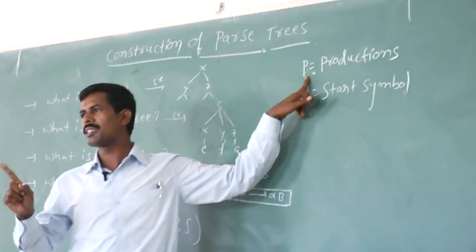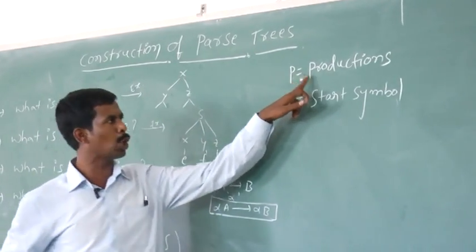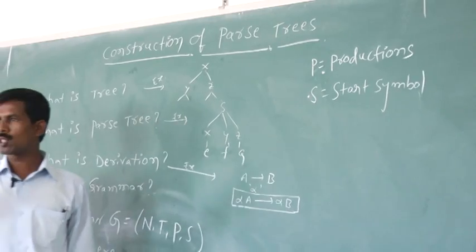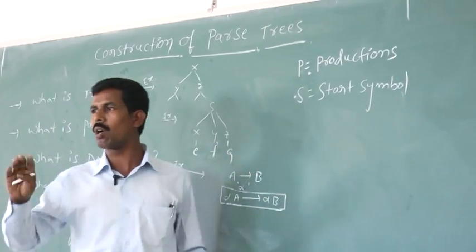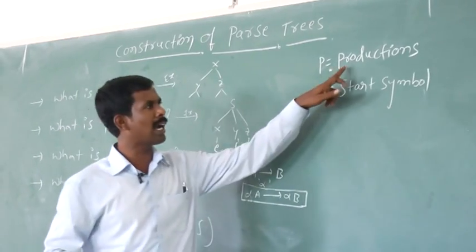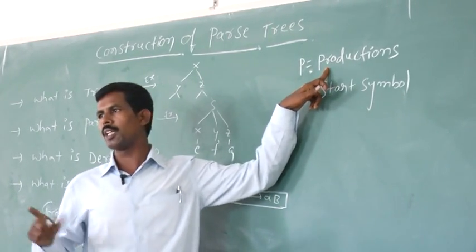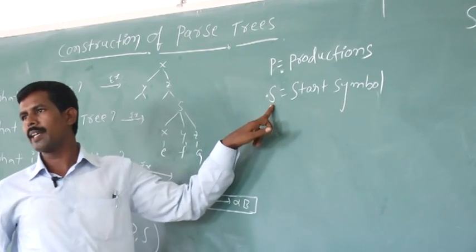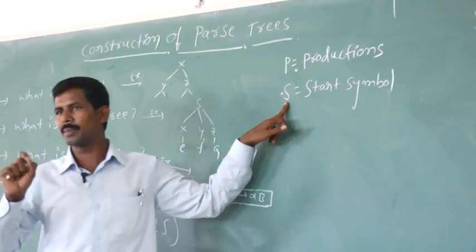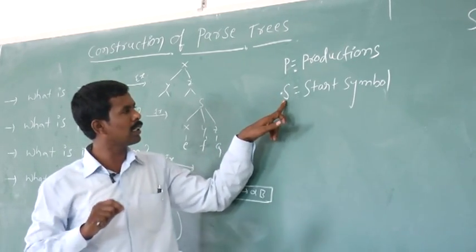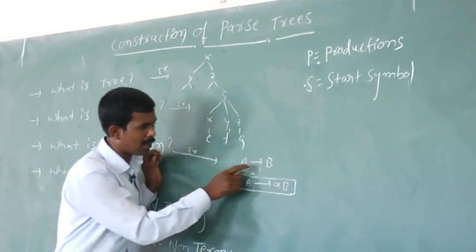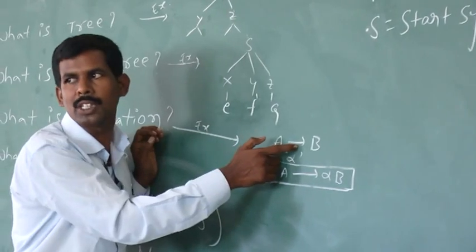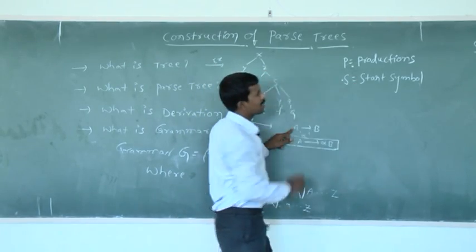Coming to the productions: productions are the combination of both terminals and non-terminals. A production sometimes contains all terminals, sometimes all non-terminals, and sometimes both terminals and non-terminals together. Without productions there is no grammar. The final component is the start symbol S. Each and every grammar must begin with the start symbol. For example, in the production A produces B, A is the start symbol.